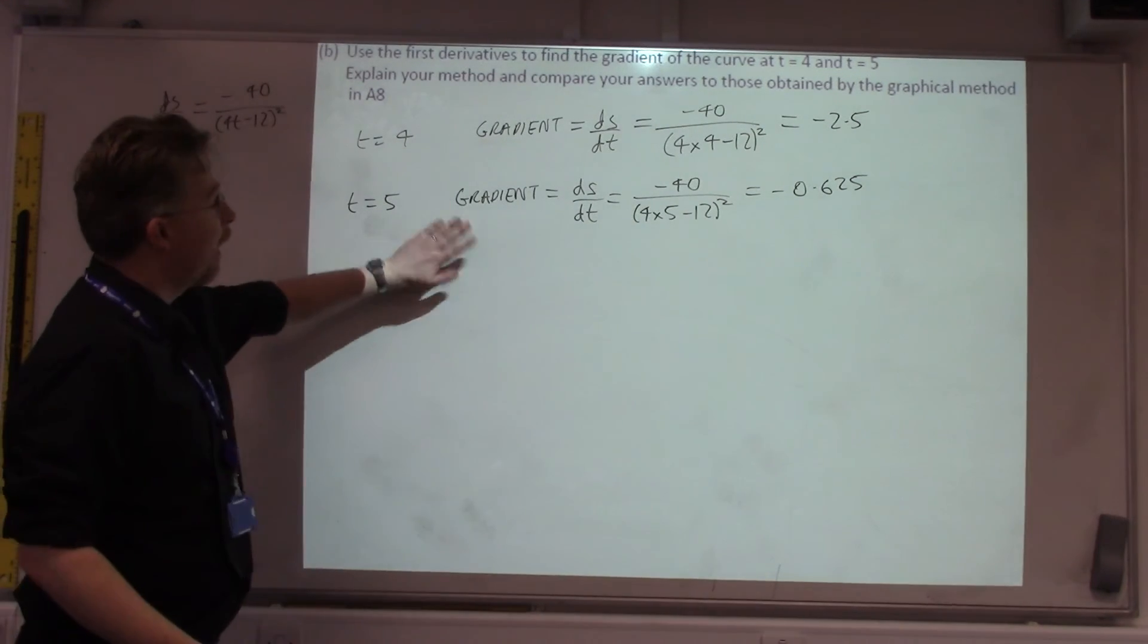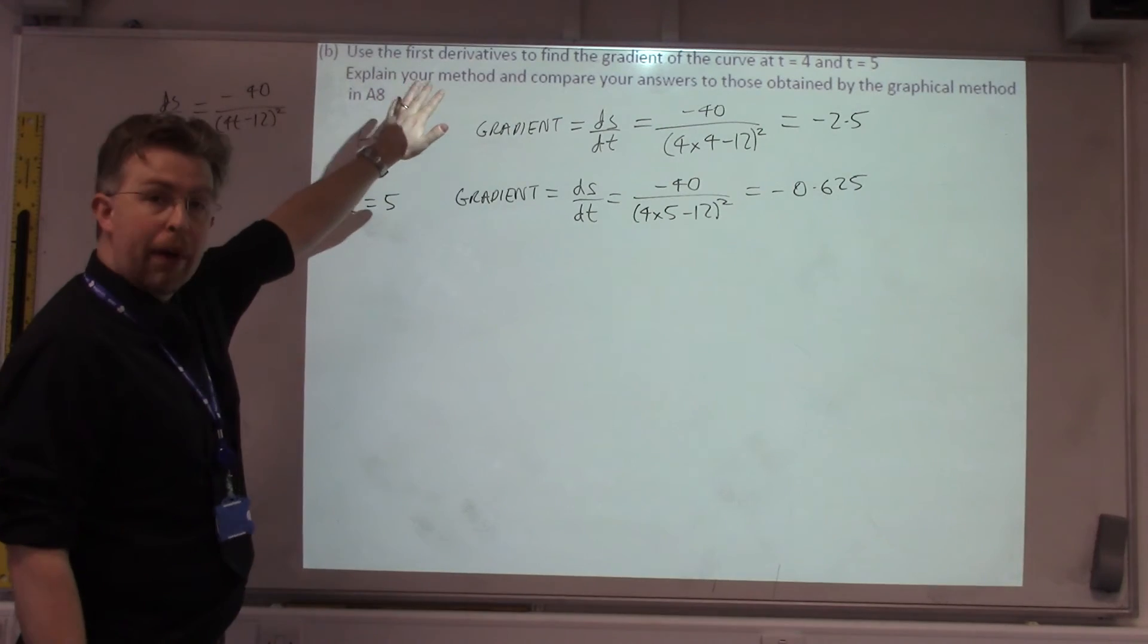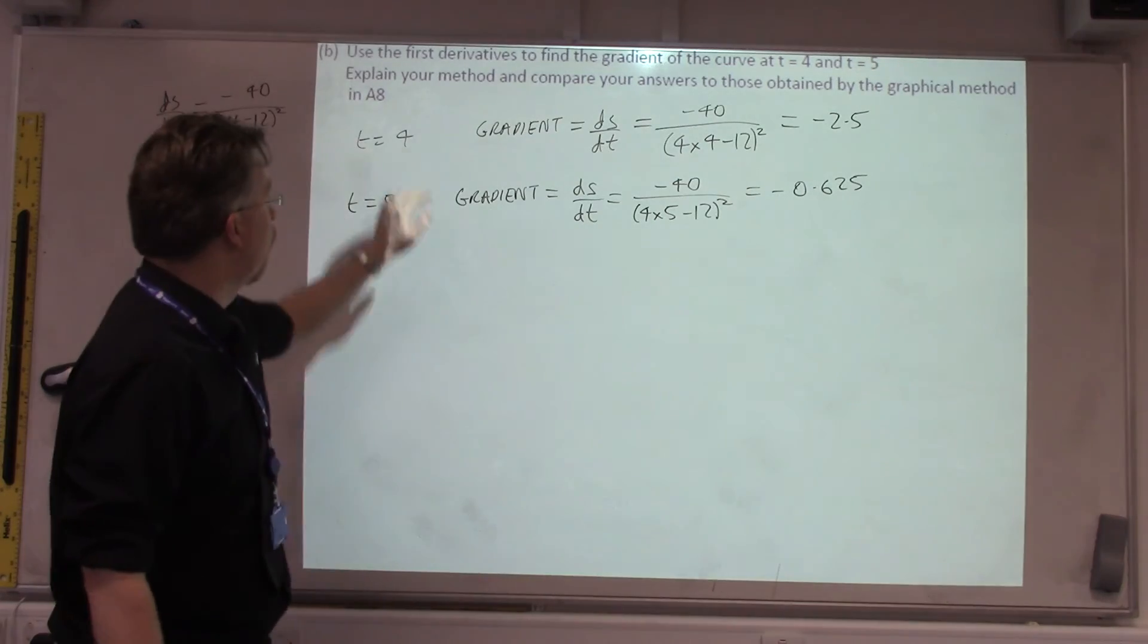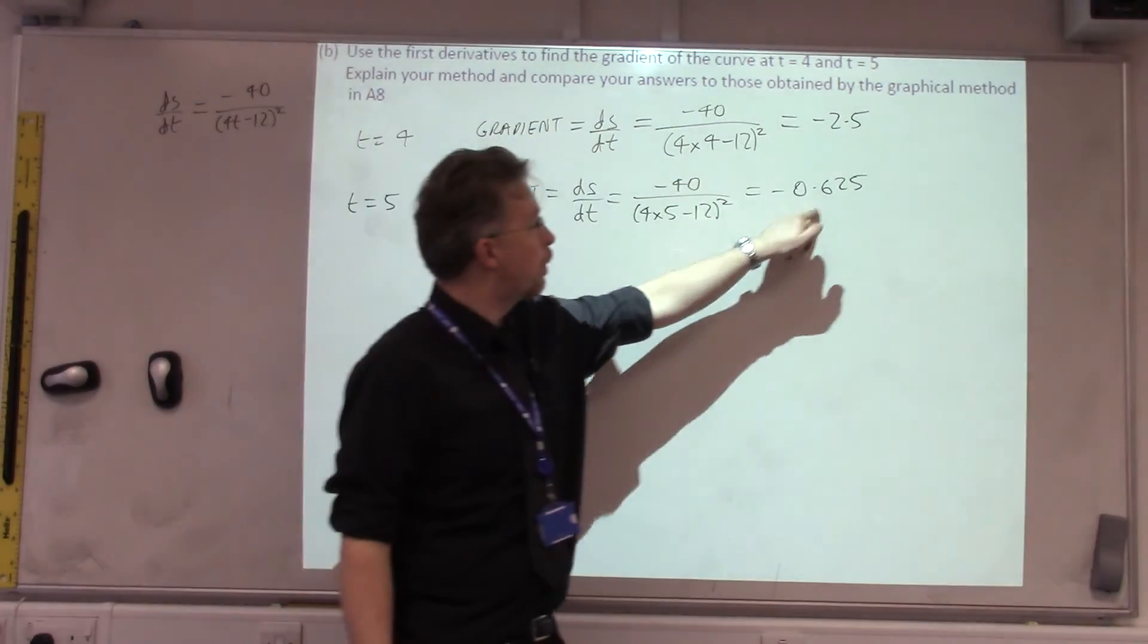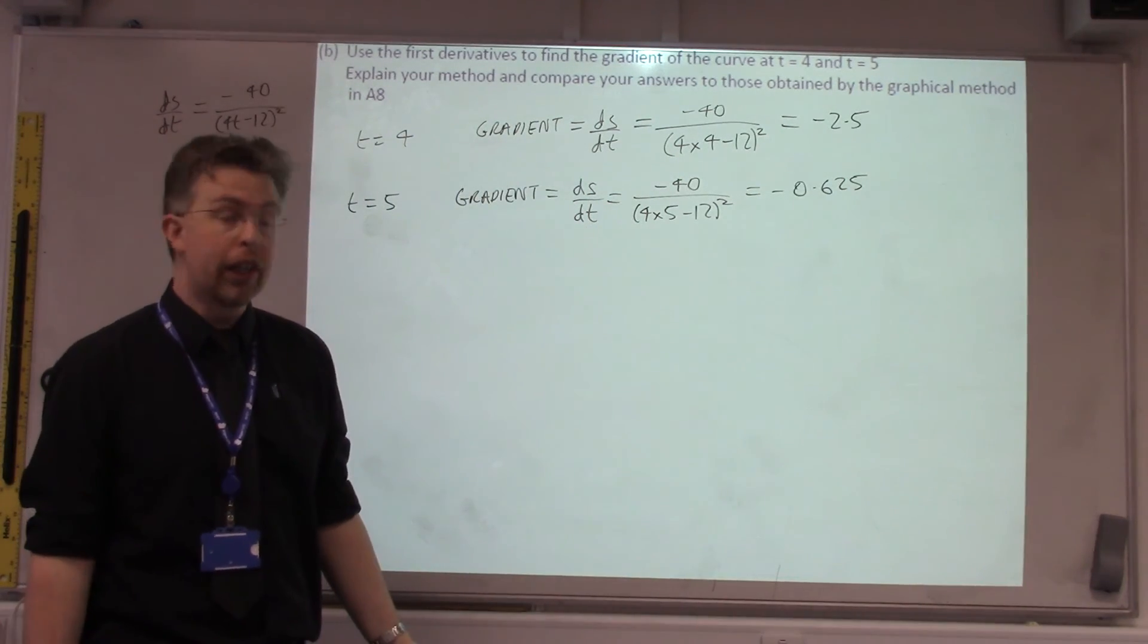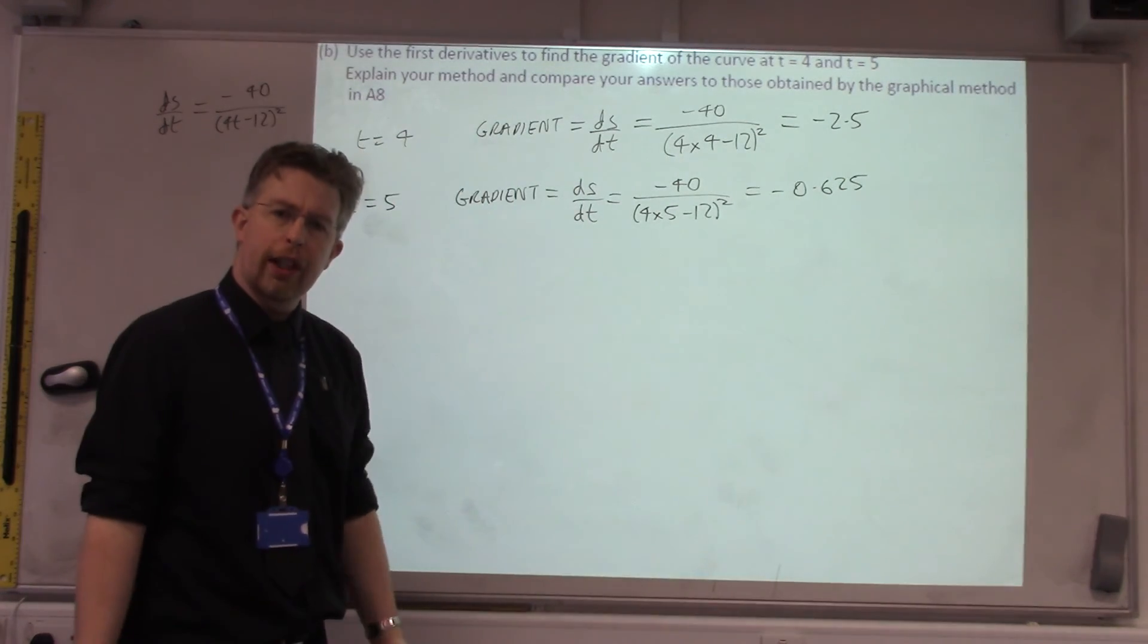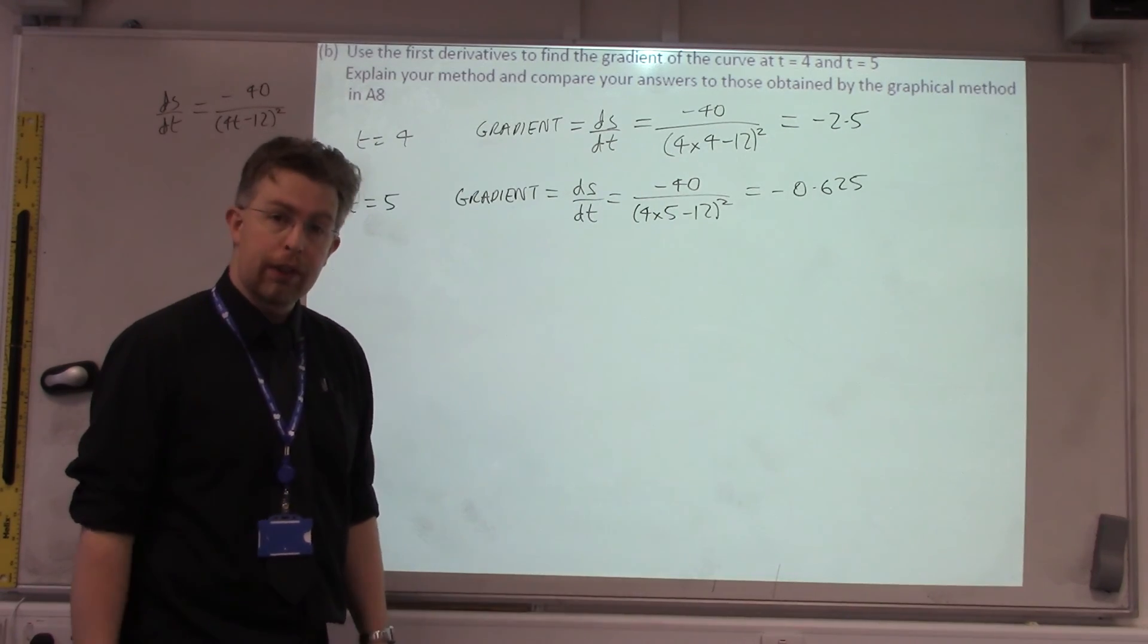Now, again, that's what you need to do to be able to pass. In order to get merits and distinctions, you need to explain your method. And also, you need to compare your answers to those obtained in A8. So, A8 were estimates. So, if your estimates were close to these answers, then you would say that your estimates are really good. If they're further away from this, they're bad estimates. They are good estimates to get a merit and distinction. You just need to make the right comparison. Best of luck.